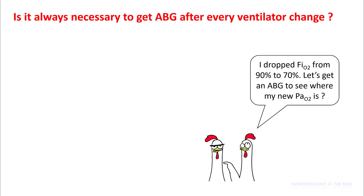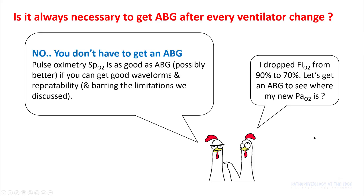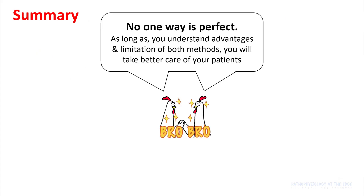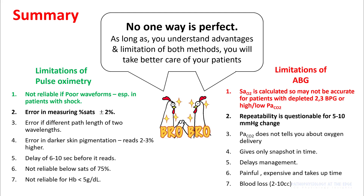So is it always necessary to get an ABG after every ventilator change? The answer is no — you don't have to get an ABG. Pulse oximetry gives you accurate SaO2 if you can get good waveforms and have good repeatability. In summary, no one way is perfect. As long as you understand the advantages and limitations of both methods, you should be able to better take care of your patient. Limitations of pulse oximetry include poor waveforms and an error rate of 5 to 10 mmHg. Thank you.